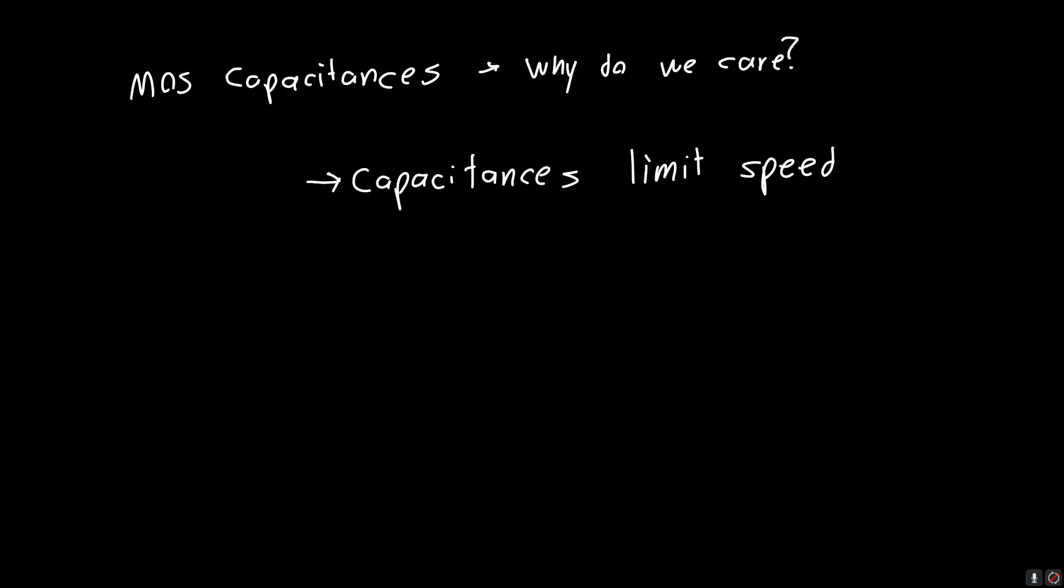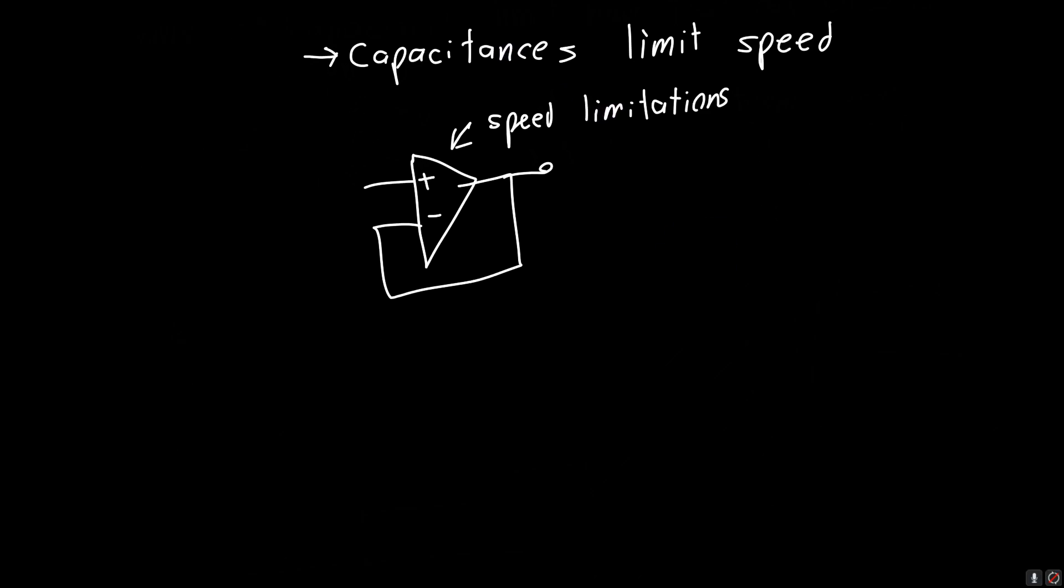So you can't design an infinitely fast op-amp, for example. This cannot be infinitely fast. This has speed limitations. And so you need to understand what those speed limitations are going to be. And ultimately, those can be traced back to the capacitances.